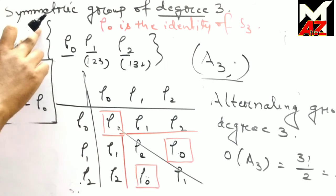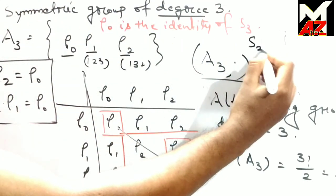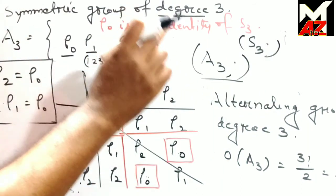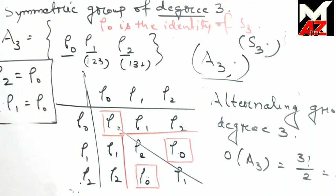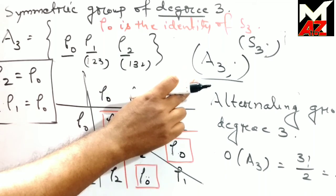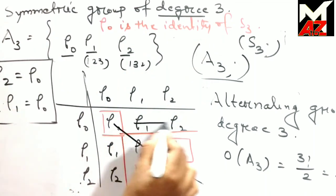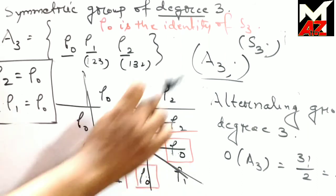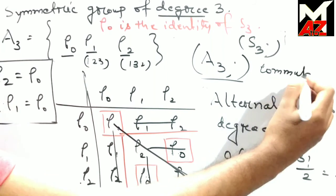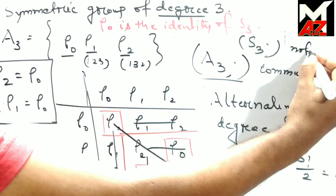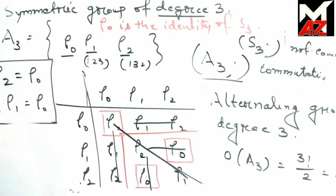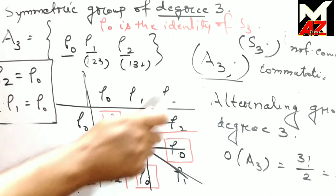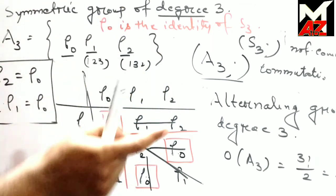In A3: ρ0 is the identity, ρ1 and ρ2 are inverses of each other, closure and associativity hold. Also, the composition table of A3 is symmetric about the principal diagonal, so A3 is commutative (abelian). This is an important example: the group S3 is non-abelian, but its subgroup A3 is abelian — a non-commutative group can have a commutative subgroup.